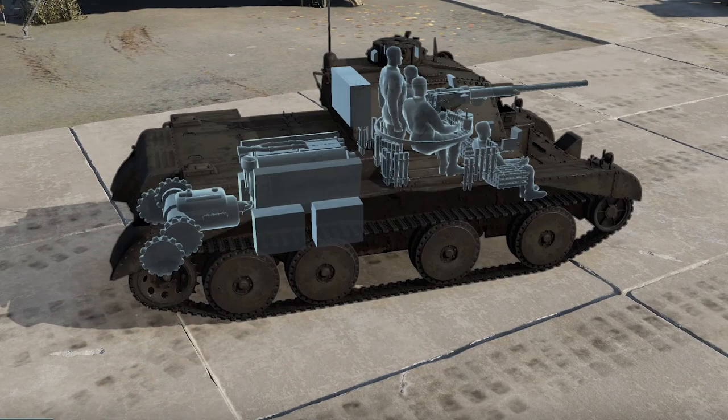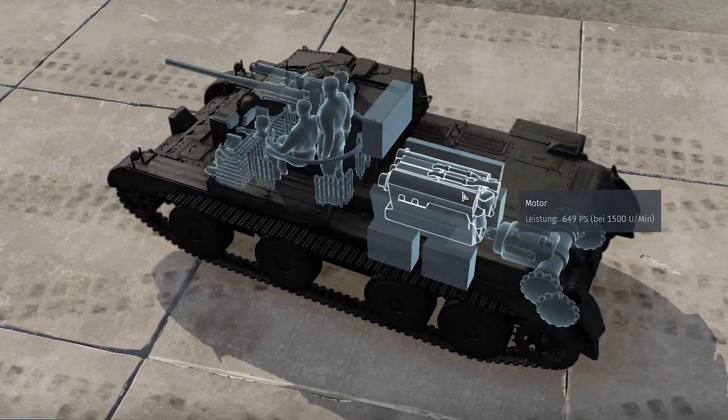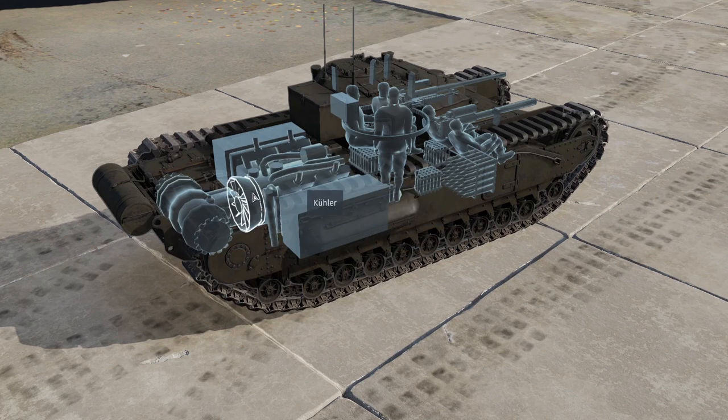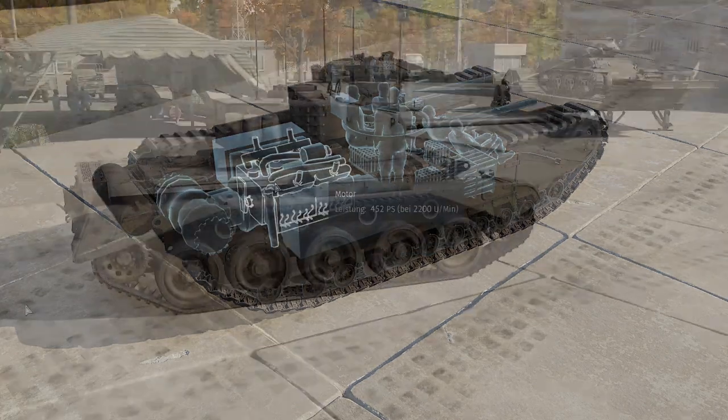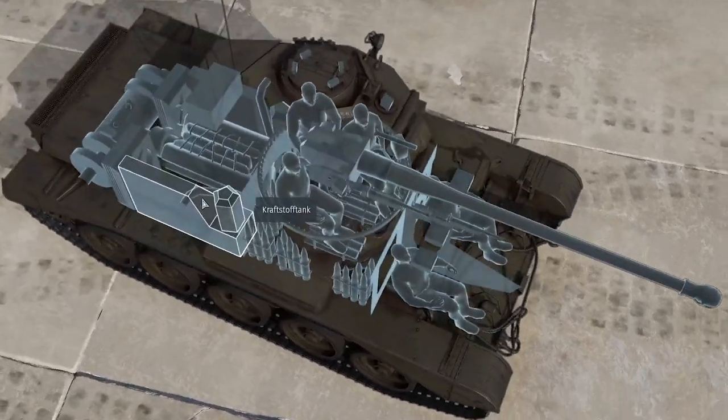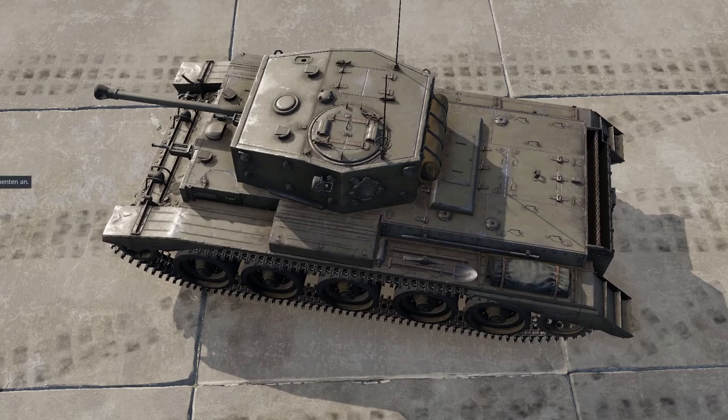Genau andersrum hat Großbritannien das gemacht. Die haben früh und konsequent auf das Heckpaket gesetzt. Der Cruiser Mark III beispielsweise hatte so einen zusammengefassten Heckantrieb und diese Tradition setzt sich durch den ganzen Krieg weiter. Der Heckantrieb findet sich beim Churchill, beim Comet und auch beim Cromwell.